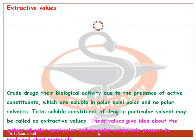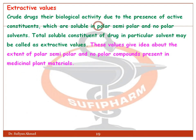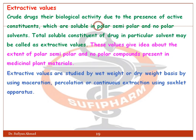Extractive value: crude drugs have biological activity due to the presence of active constituents that are soluble in polar, semi-polar, and non-polar solvents. The total soluble constituents of the drug in a particular solvent are called the extractive value. These values give an idea about the extent of polar, semi-polar, and non-polar compounds present in the medicinal plant material. Extractive values are studied on a weight-by-weight or dry-weight basis using maceration, percolation, or continuous extraction by the Soxhlet apparatus.